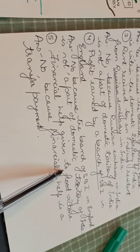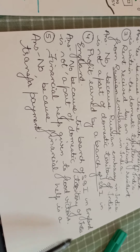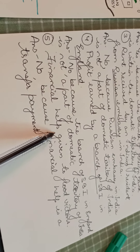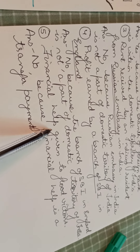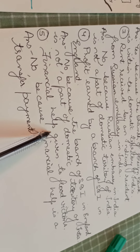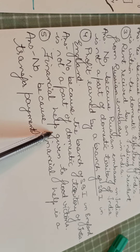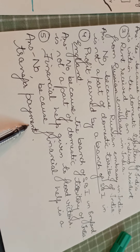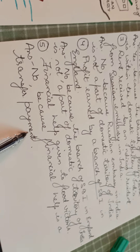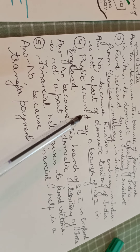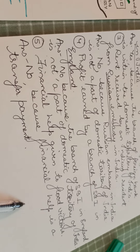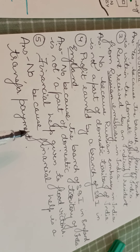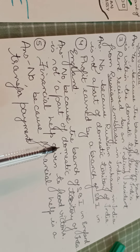Last part: financial help given to flood victims. Any kind of financial help is not at all a factor income — it is simply a transfer income. Answer is no, because financial help is a transfer payment. In domestic income, we include only factor incomes and do not include any type of transfer incomes.